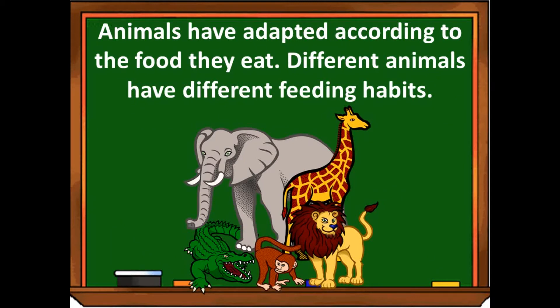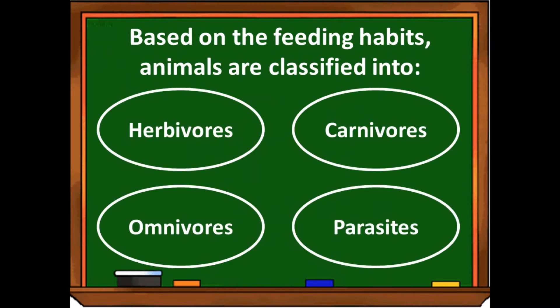Animals have adapted according to the food they eat. Different animals have different feeding habits. Based on the feeding habits, animals are classified into four categories: first one is herbivores, then carnivores, omnivores and parasites.